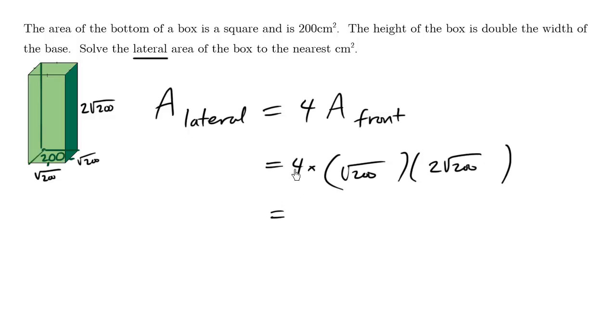And so using your calculator, you can compute out the answer, but you can also do this in your head. Four times two is eight times the square root of 200 times the square root of 200 is 200. And so the final answer is 1600. We're talking about the unit centimeters squared.